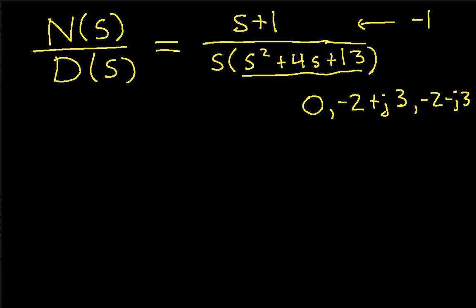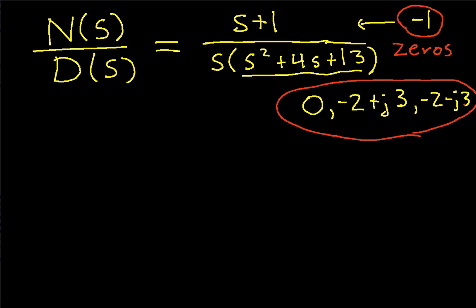It turns out that the location of these roots of the numerator and denominator polynomials are extremely important. In particular, the roots of the denominator polynomial tell us the sorts of time functions that are going to show up in an inverse Laplace transform. To introduce some notation: we call the roots of the numerator zeros, and we call the roots of the denominator poles.